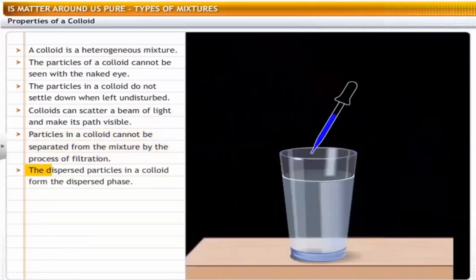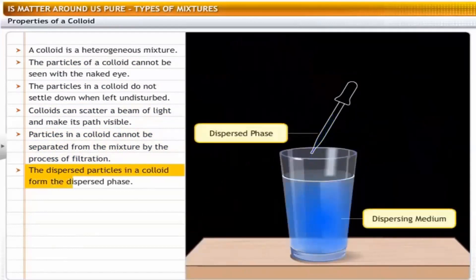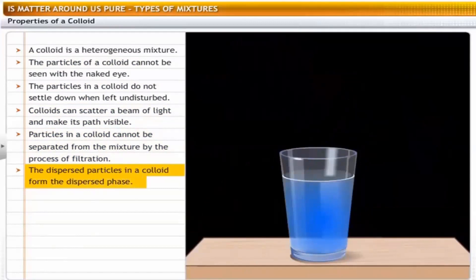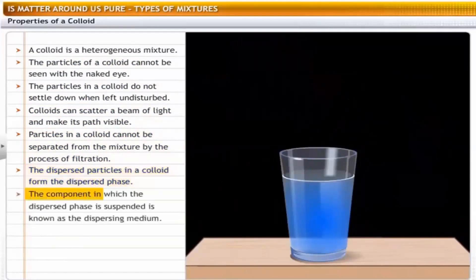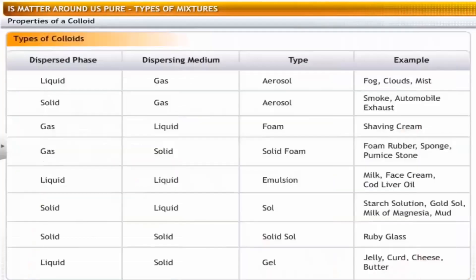A colloidal solution has two components: the dispersed phase and the dispersing medium. The solute-like component or dispersed particles form the dispersed phase. The component in which the dispersed phase is suspended is known as the dispersing medium. You can classify a colloid according to the state of the dispersing medium and the dispersed phase — there can be many types of colloids.